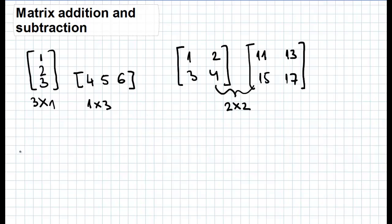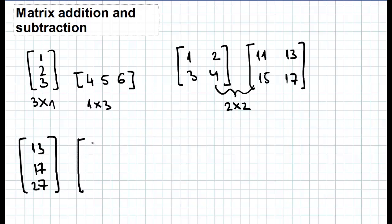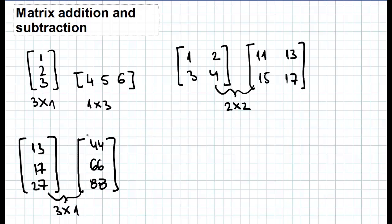The same applies to these two matrices: first with elements 13, 17, 27 and second with elements 44, 66, 88. Both of these matrices have the same size and shape and their order is 3×1, so they can be added and subtracted.